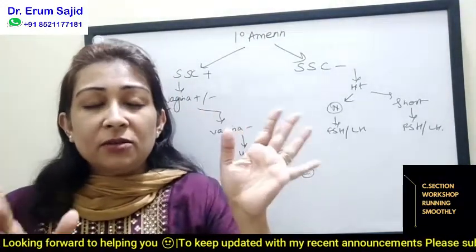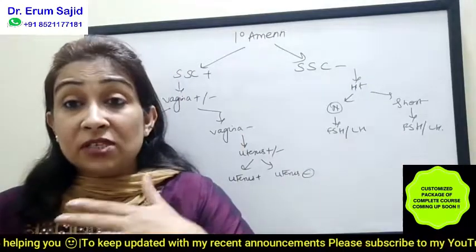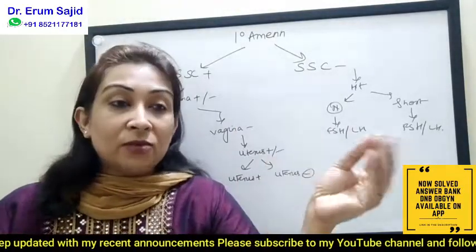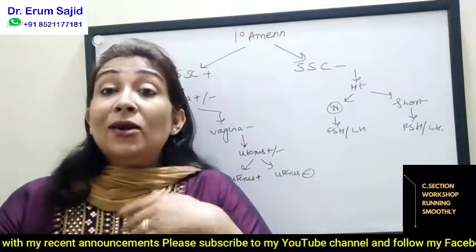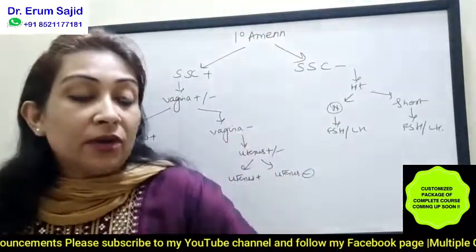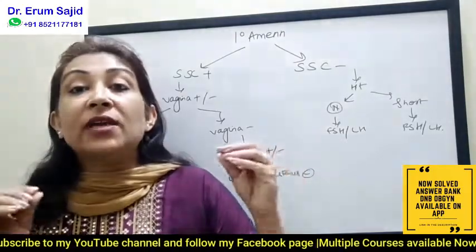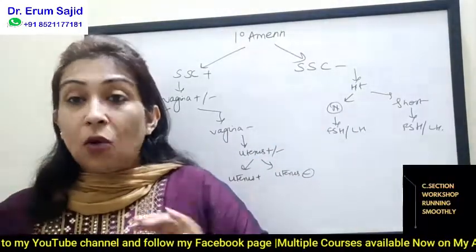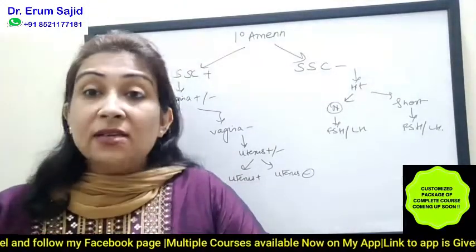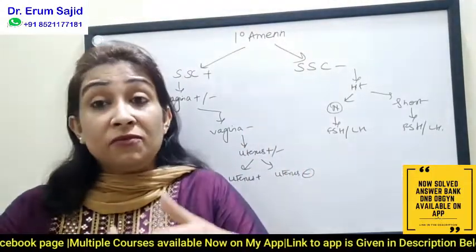Another important thing to remember is hirsutism and the Ferriman-Gallwey scoring. It's another confusing topic — how many sites to assess, what scores are 0, 4, maximum, minimum, and the differences in between. I've described that in the class on pubertal aberrations. Coming back to the topic: when a patient walks in and you've defined that she is a candidate for primary amenorrhea, the most important thing — even in the definition — is secondary sexual characteristics. You must notice whether she has any while examining her. You can ask in history about breast budding, breast mound, breast development, axillary hair, and pubic hair, and you will do Tanner staging during examination.